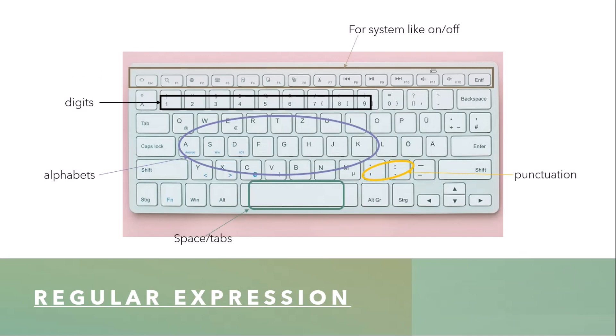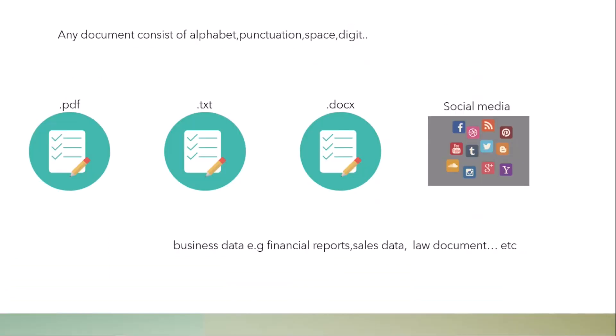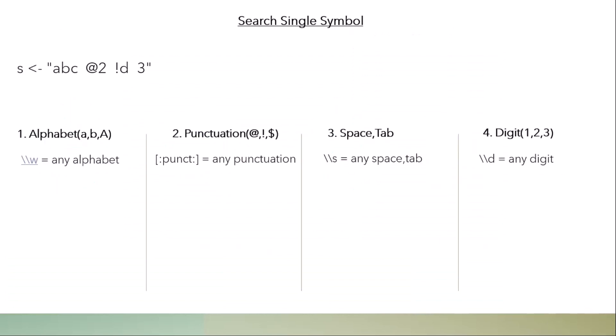All text data consists of either digits like 1, 2, 3, or alphabets like A, B, C, D, or spaces and tabs, or punctuation — punctuation includes dots, commas, and similar symbols. Any document you see, like a PDF file, text file, Microsoft Word file, social media data, or financial report, consists of a combination of alphabets, punctuation, spaces, and digits.